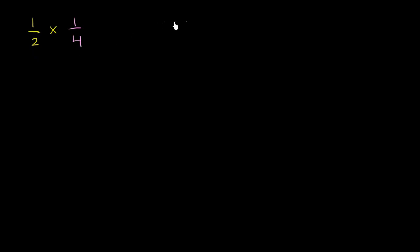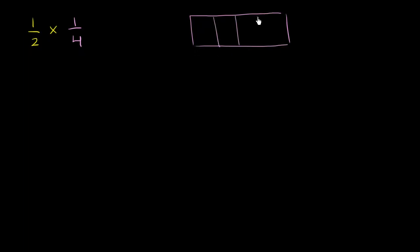Let me take a whole here and let me divide it into fourths — four equal sections. So 1 fourth would be one of these four equal sections. But we want to take 1 half of that. We could divide this into two equal sections and then just take one of them.